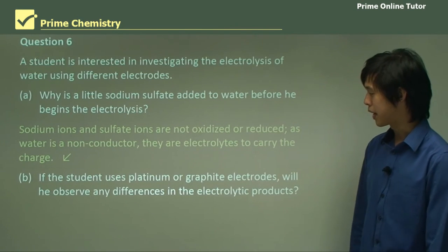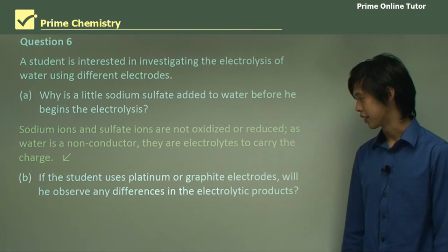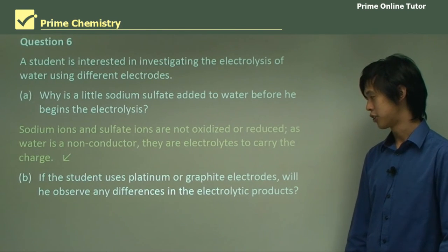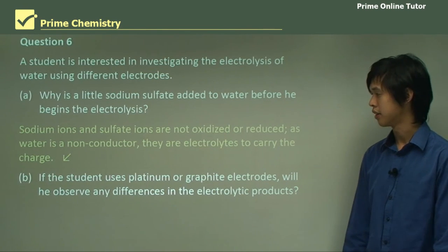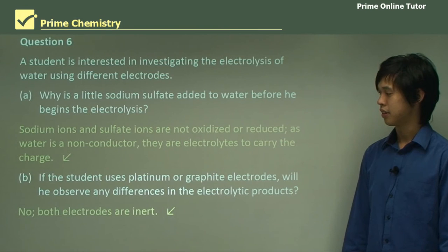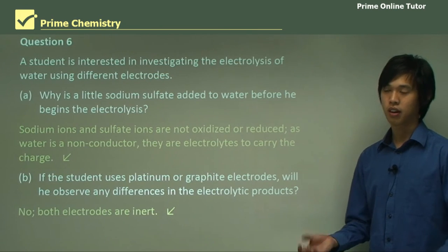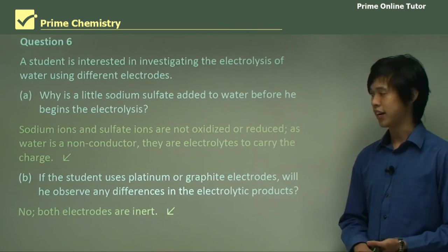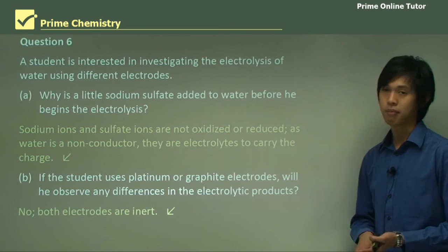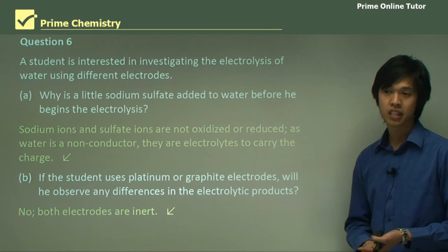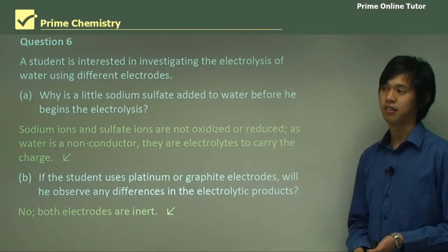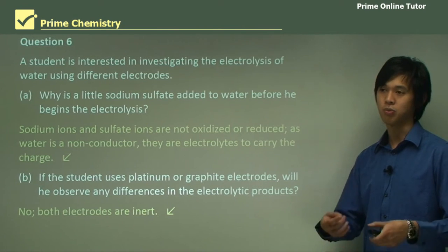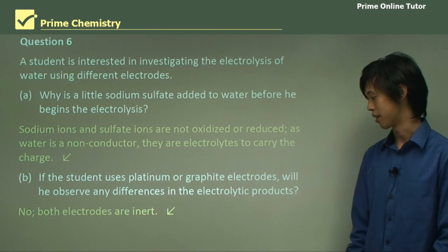If the student uses platinum or graphite electrodes, will he observe any differences in the electrolytic products? No — both graphite and platinum are completely inert, so they won't react with the solution, and you won't see any difference in electrolytic products.